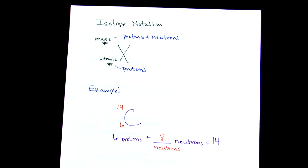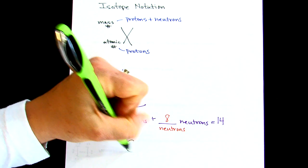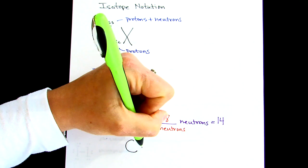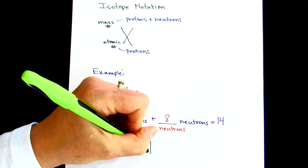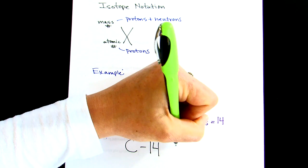Now there is another type of notation that you might have seen on slides earlier, in which it takes the element symbol. And then it has a hyphen, and then it will have the mass number. And this is called hyphen notation.